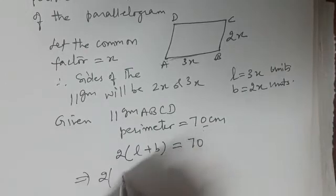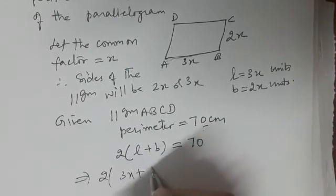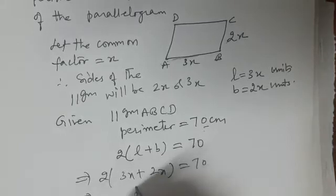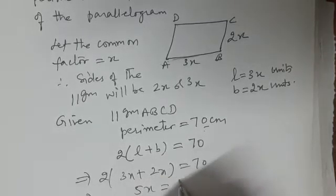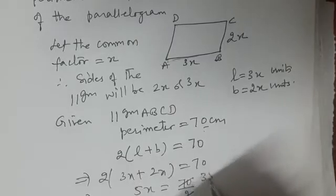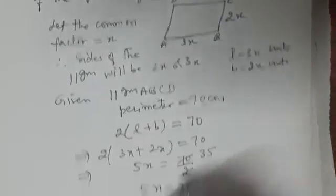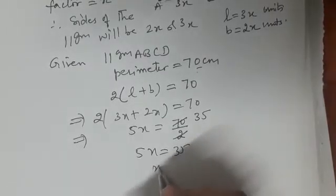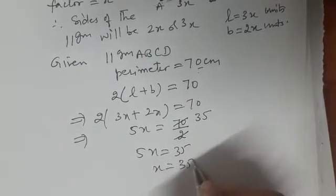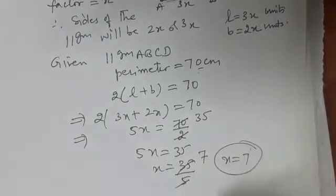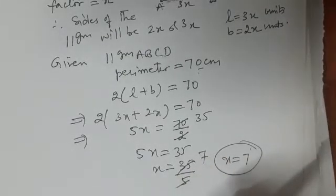This implies 5x equals 70 divided by 2, which we can simplify to get 35. So 5x equals 35. Simplifying this, x comes out to be 35 divided by 5, that is 7. So the value of x is 7.